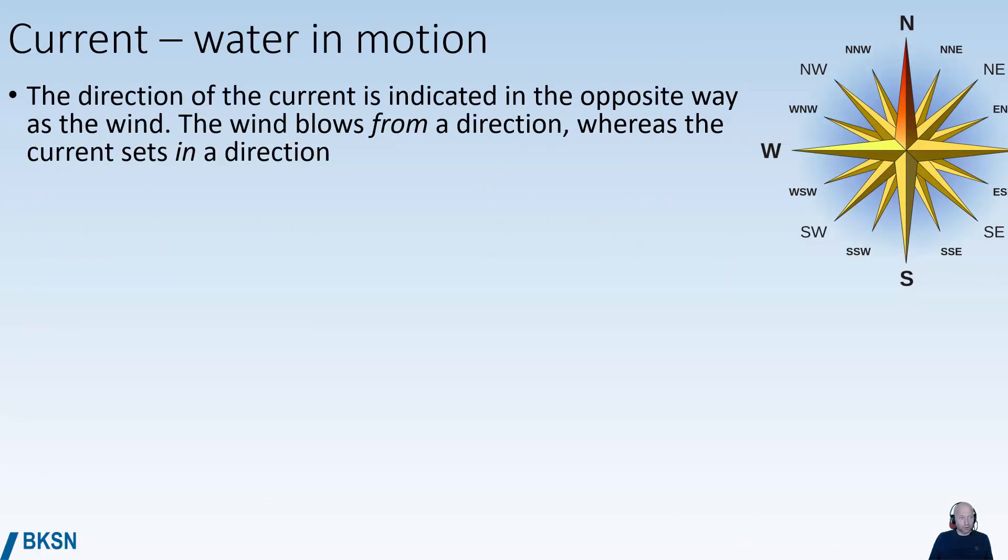Current, water that's in motion, is another factor that influences the course that we actually end up making good. The direction of the current is indicated in the opposite way as the direction of the wind. We say that the wind blows from a direction, whereas the current sets in a direction.